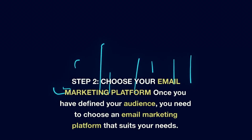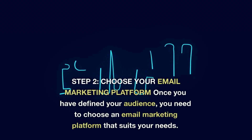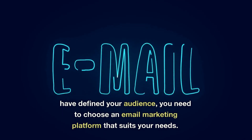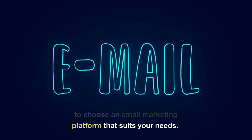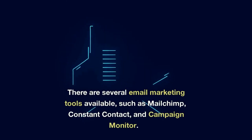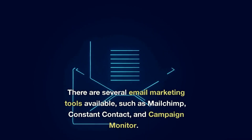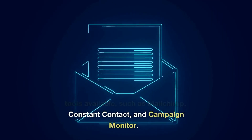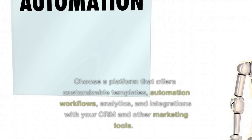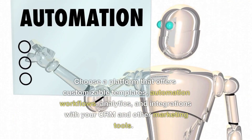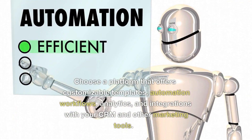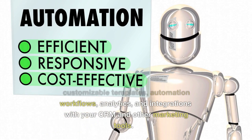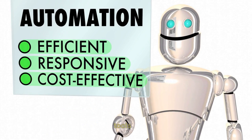Use this information to segment your audience into smaller groups and tailor your messaging accordingly. Step 2: Choose your email marketing platform. Once you have defined your audience, you need to choose an email marketing platform that suits your needs. There are several email marketing tools available, such as MailChimp, Constant Contact, and Campaign Monitor. Choose a platform that offers customizable templates, automation workflows, analytics, and integrations with your CRM and other marketing tools.